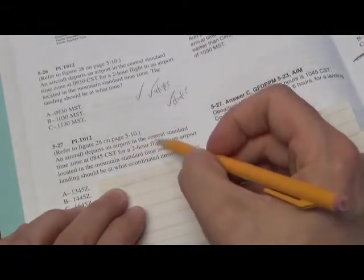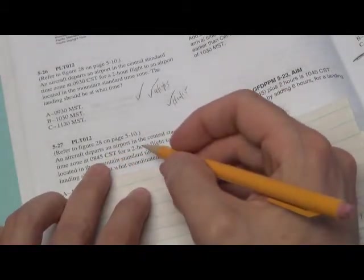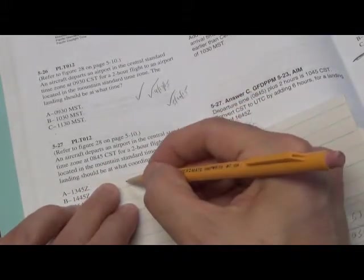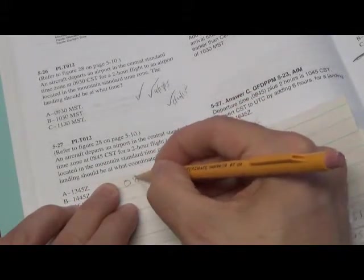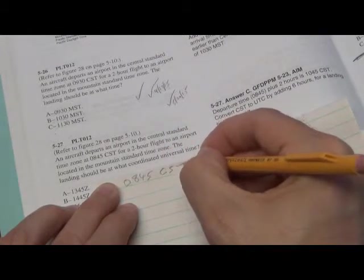So let's read the question. An aircraft departs an airport in the Central Standard Time Zone at 0845 Central Standard Time. So we write down 0845 Central Standard Time.